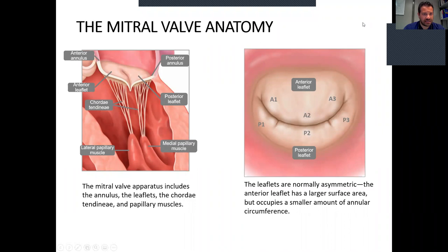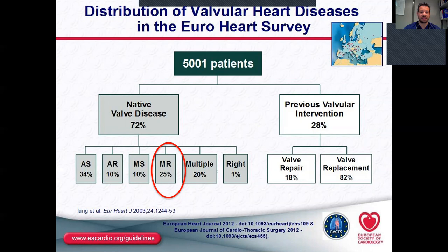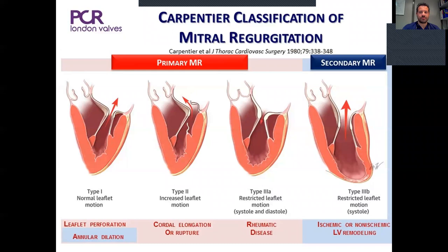As you all know, MitraValve has a complex anatomy. It consists of two asymmetric leaflets — one large anterior and one smaller posterior leaflet. We have the subvalvular apparatus with papillary muscles and cordae. From the patients suffering from valvular heart diseases, 25% of them have mitral regurgitation, and it is important to know the Carpentier classification and to differentiate primary from secondary MR.